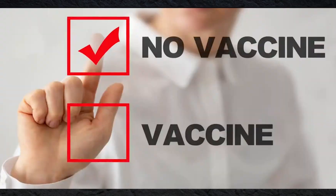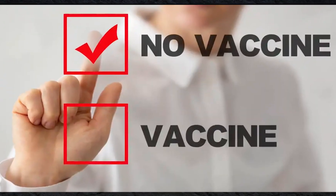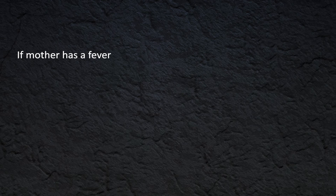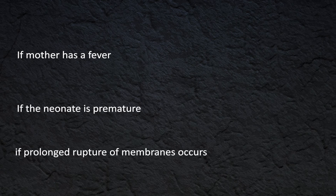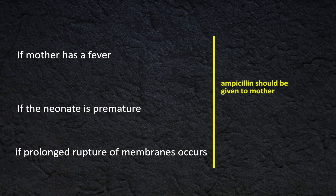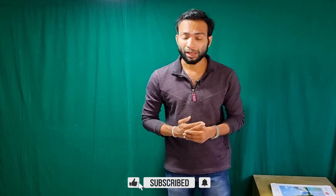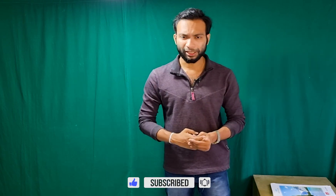Pregnant carriers at risk of premature rupture of membranes or prolonged labor should be treated with ampicillin during labor. There is currently no vaccine for the prevention of this infection. If the mother has a fever, if the neonate is premature, or if prolonged rupture of membranes occurs, ampicillin should be given to the mother. I hope you enjoyed this video and gained knowledge about this streptococcal bacteria. Don't forget to subscribe to our YouTube channel and hit the bell icon for more medical laboratory science videos.